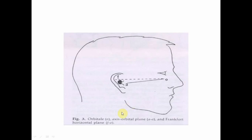The Frankfurt horizontal plane also passes through the porion and through the orbitale. The axis-orbital plane also passes through the orbitale but is below the Frankfurt horizontal plane.